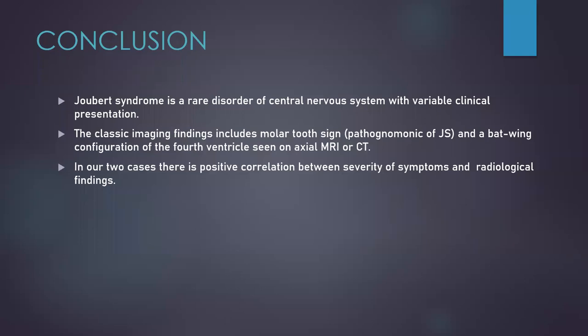To conclude, Joubert syndrome is a rare disorder of the central nervous system with variable clinical presentation. The classic imaging findings include molar tooth sign, which is pathognomonic of Joubert syndrome, and a batwing configuration of the fourth ventricle, which could be seen both on CT and MRI. In our two cases, there is a positive correlation between severity of symptoms and radiological findings; however, many more studies need to be done to prove it statistically relevant.